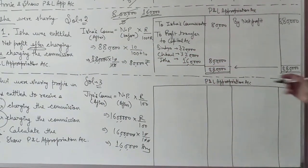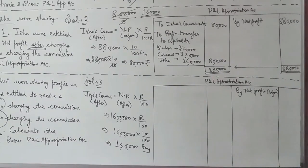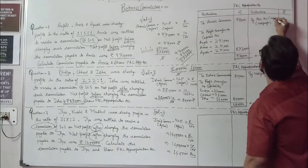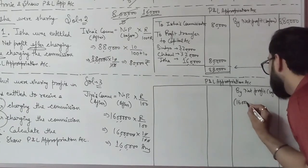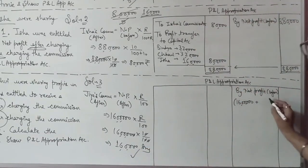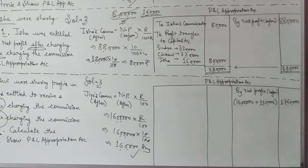The important part is how this will be represented in the P&L appropriation account. Net profit in the P&L appropriation account should always be before charging such commission or any other partner-related expenses like salary, interest on capital, interest on drawings. Here, 16 lakh is the profit after charging such commission, so the commission must be added back. Commission is 1,60,000 rupees, so the correct net profit before charging commission = 16,00,000 + 1,60,000 = 17,60,000 rupees.